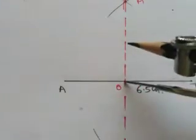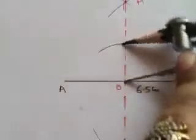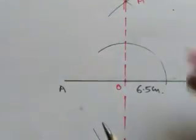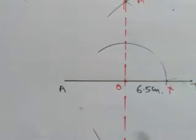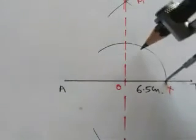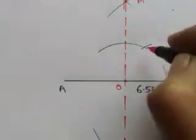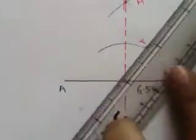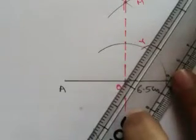Put it on O and draw a semicircle. Without changing the radius, put the compass pointer at X and draw the first arc. This point I will represent as Y and join it with O.